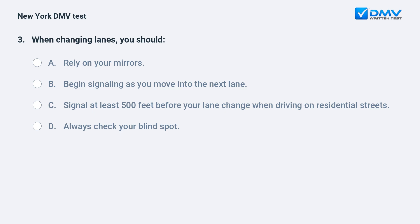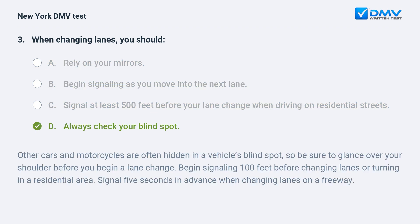When changing lanes, you should: A. Rely on your mirrors. B. Begin signaling as you move into the next lane. C. Signal at least 500 feet before your lane change on residential streets. D. Always check your blind spot. The answer is D. Other cars and motorcycles are often hidden in a vehicle's blind spot, so glance over your shoulder before beginning a lane change. Begin signaling 100 feet before changing lanes in a residential area, and signal 5 seconds in advance on a freeway.